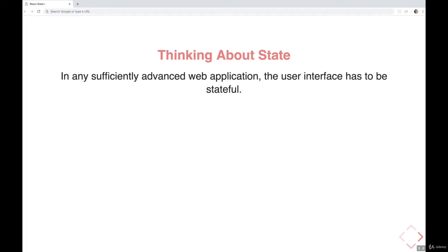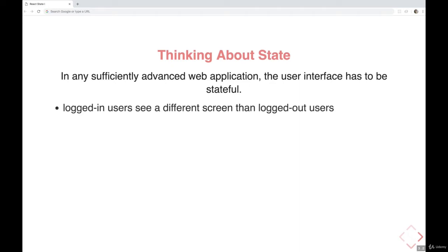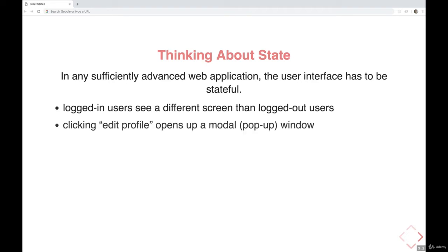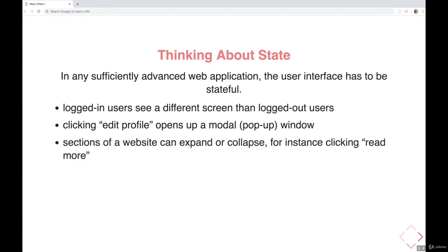There's some data, some information that is liable to change, and we want to keep track of that somewhere. For example, we have an application where some logged-in users see something different compared to logged-out users, or an app where you can click an edit button and it opens up a pop-up. We need to keep track of if the pop-up is open or closed.